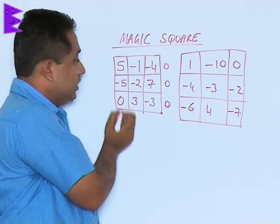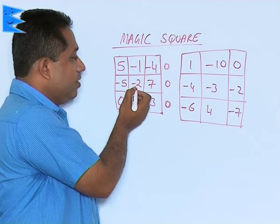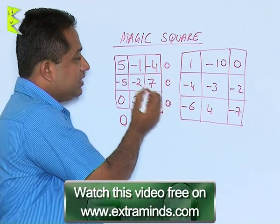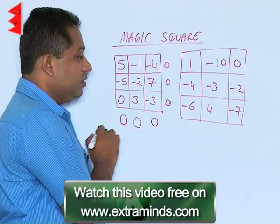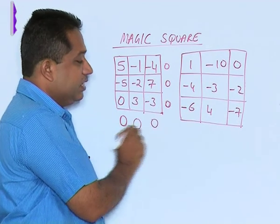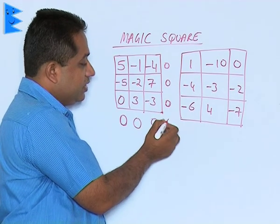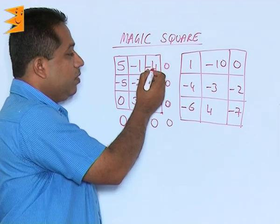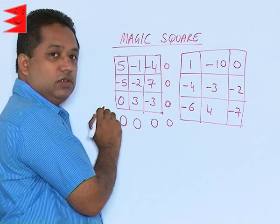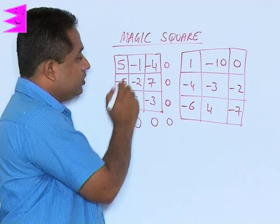Now look at the columns. Adding vertically downwards: 5 minus 5 is 0, plus 0 gives 0. Minus 1 and minus 2 is minus 3, minus 3 plus 3 is again 0. Minus 4 plus 7 is positive 3, and 3 minus 3 is again 0. So when we add up all the vertical columns, we again get 0. Looking at the diagonal: 5 minus 2 is 3, and 3 minus 3 gives us 0. But the other diagonal — minus 4 and minus 2 gives minus 6, minus 6 plus 0 is minus 6 — so here we are not getting 0, as we did in the rows and columns.